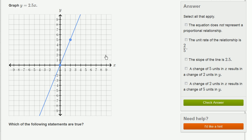But then they also tell us to select the statements that are true. So the first one is the equation does not represent a proportional relationship. Well, this is a proportional relationship. A proportional relationship is one where if you have 0 x's, you're going to have 0 y's, where y is equal to some constant times x. And here, y is equal to 2.5 times x. So this is definitely a proportional relationship. So I'm not going to check that.